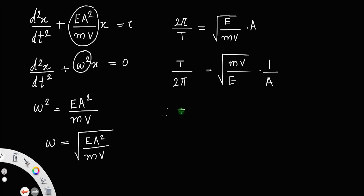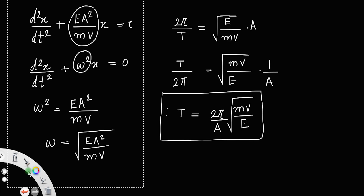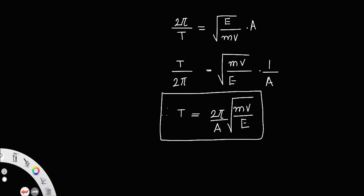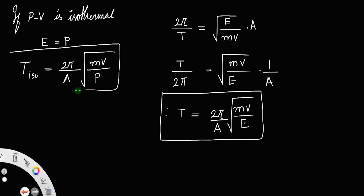Therefore, the time period T is equal to 2 pi divided by omega, which gives T equals 2 pi times the square root of M V divided by E A squared. This is the expression for the time period. Now, for the isothermal process, if the variation of pressure and volume is isothermal, in the isothermal case, the bulk modulus equals the pressure P. So the time period for isothermal is equal to 2 pi divided by A, times the square root of M V divided by P.